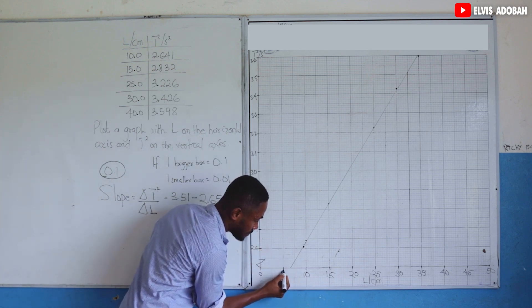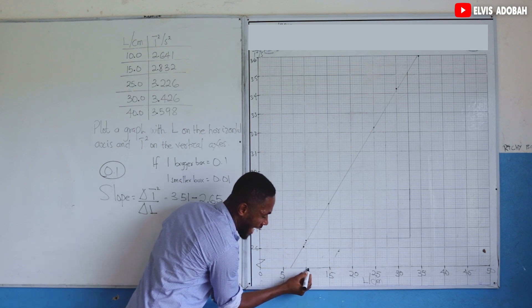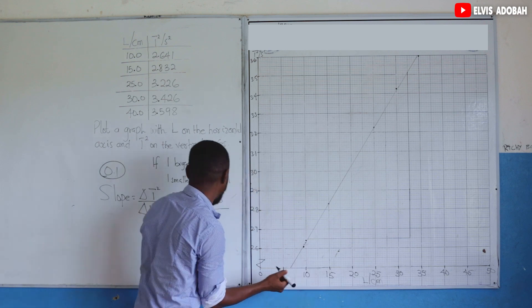So this is 5, this is 10. Then we have a smaller box after 10. That should give us 10.5.